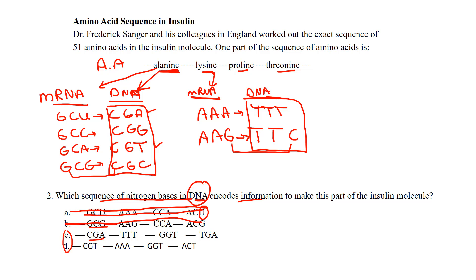Now let's compare. Choice C has TT, which does appear in our lysine DNA options. But choice D has AAA for that position, and that doesn't appear anywhere in the DNA sequences we decoded — so we can eliminate D. By deduction, C is our answer. That's the best strategy when they give you amino acids and want you to find the DNA that coded for them. Any questions, send me an email and we'll go over it.